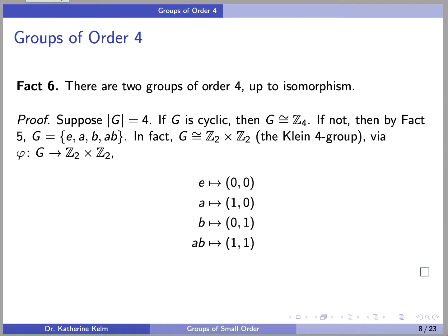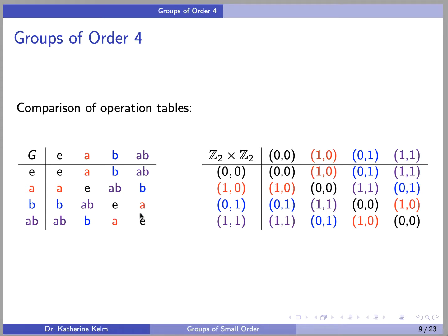Fact 6: there are exactly two groups of order 4 up to isomorphism. Proof: suppose the order of g is 4. If g is cyclic, then g is isomorphic to Z4. If not, then by Fact 5, g is the group {e, a, b, ab}, and in this case g is isomorphic to Z2 cross Z2, known as the Klein 4 group, via the isomorphism sending e to (0,0), a to (1,0), b to (0,1), and ab to (1,1). Here are the operation tables for each group, and you can compare and see that they are identical except for the names of the elements.